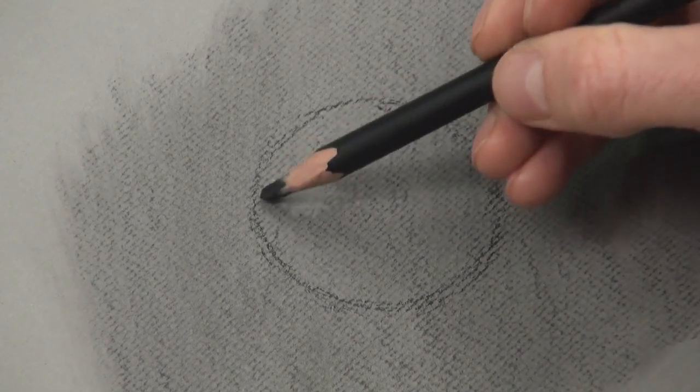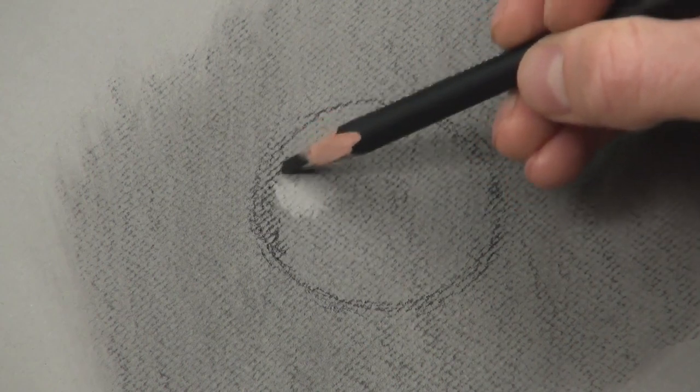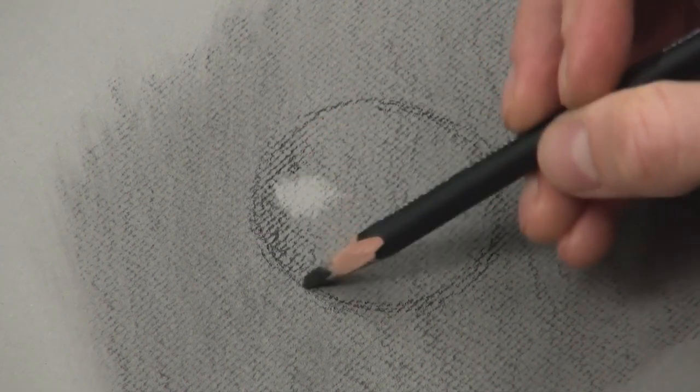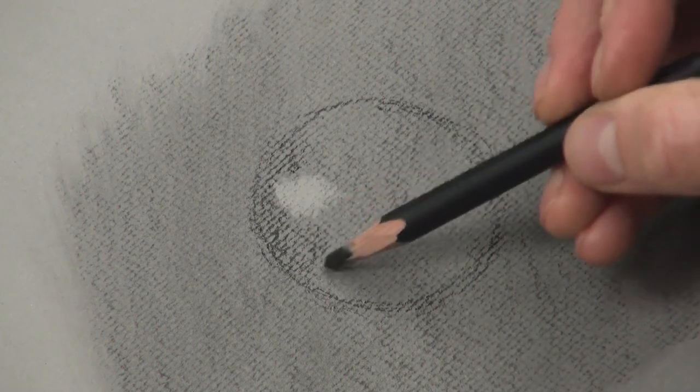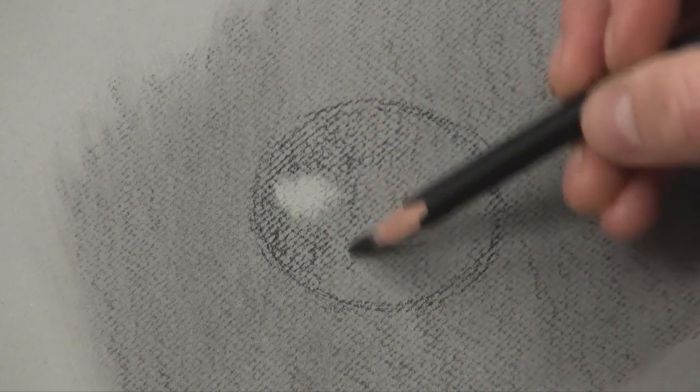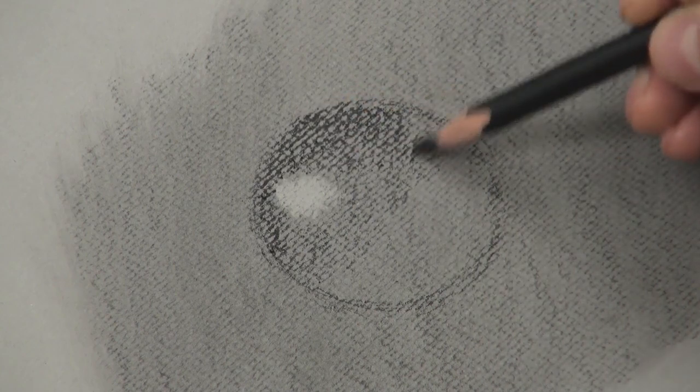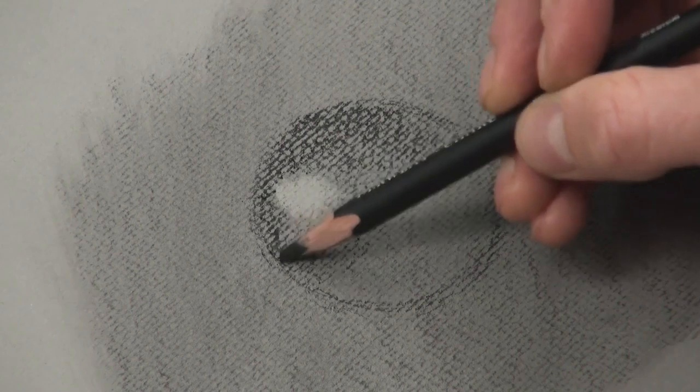Okay, so back with the charcoal pencil, a darker charcoal pencil. So I'm going to go darker nearer the top and then as I get about halfway, I'm going to leave it the value of the background. So darker towards the top and then gradually lightening off towards the center.